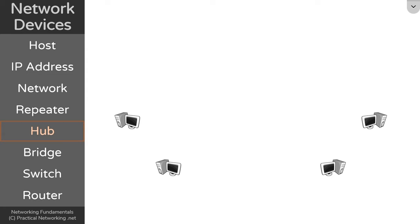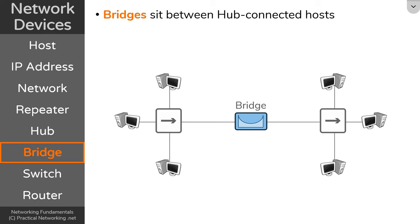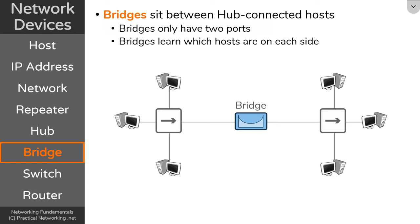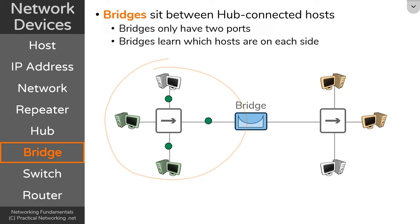Which brings us to bridges. Here we have two sets of hosts, all interconnected using a hub. A bridge is meant to sit in between hub-connected hosts. Bridges, by definition, only have two ports — one port facing one set of hub-connected devices and another port facing the other set. Bridges will also learn which hosts are on which side of the bridge, allowing the bridge to contain communication to only the side that is necessary. For example, if these hosts need to speak to each other through that hub, the hub will regenerate the signal at all ports. But the bridge knows the other green host is on the same side, and therefore won't bring that packet to the other side. The bridge is the first type of device that helps contain packets only to their relative networks.